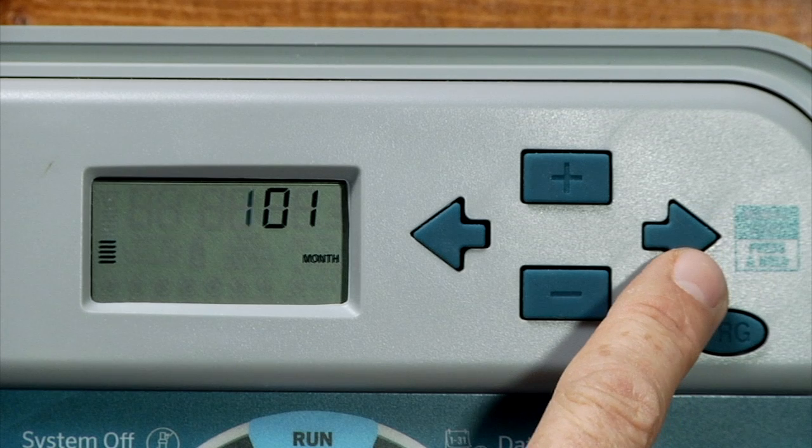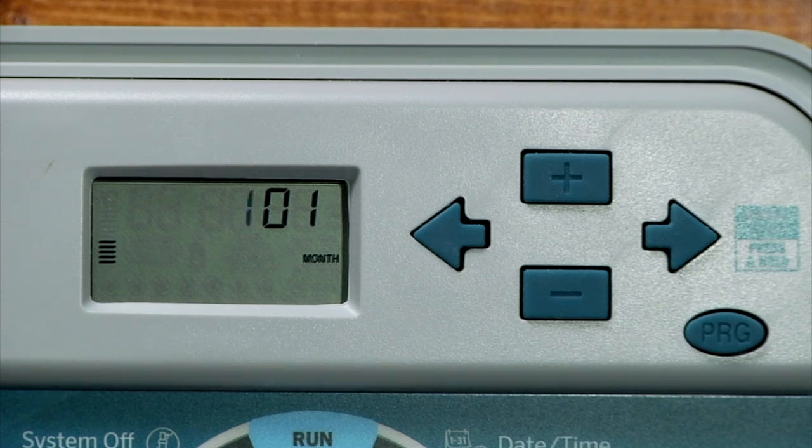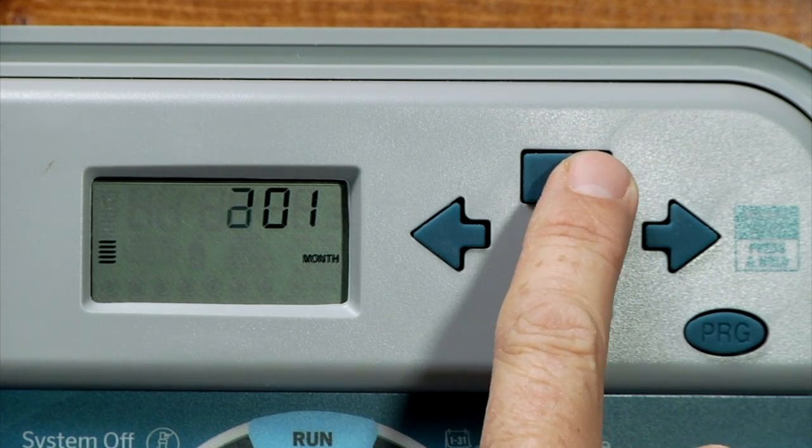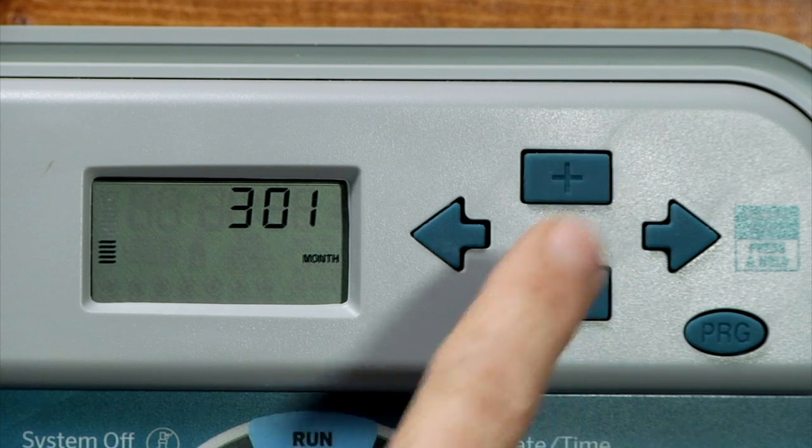Using the right arrow, we go to the next function, which is the month. We'll use the plus or minus to go to March.